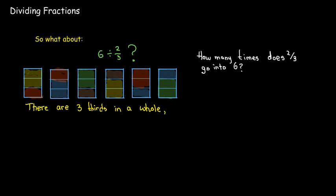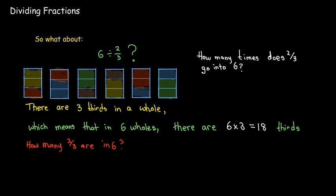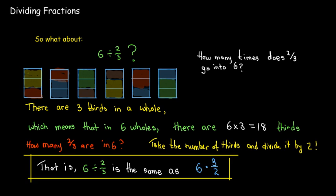And how can we get that without actually counting? Well, there's 3 thirds in a whole, so we know there's 18 thirds all together. How many groups of 2 thirds? I'd have to take 18 and divide it by 2. And that will give me 9. And so again, 6 divided by 2 thirds is the same as taking 6 times 3, that's the number of thirds in 6, and dividing it by 2 because we want groups of 2 thirds.